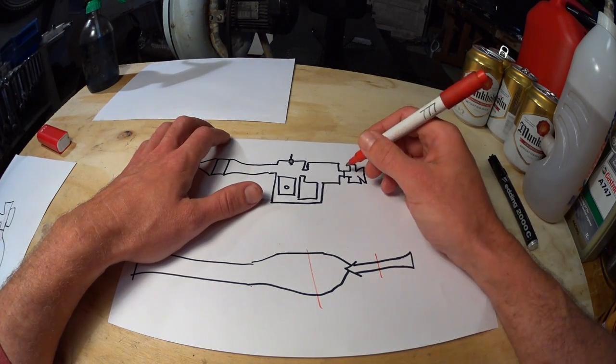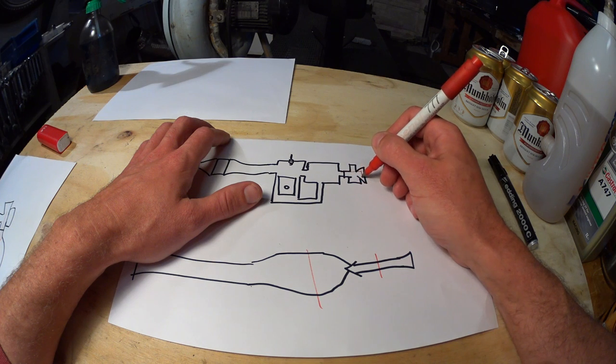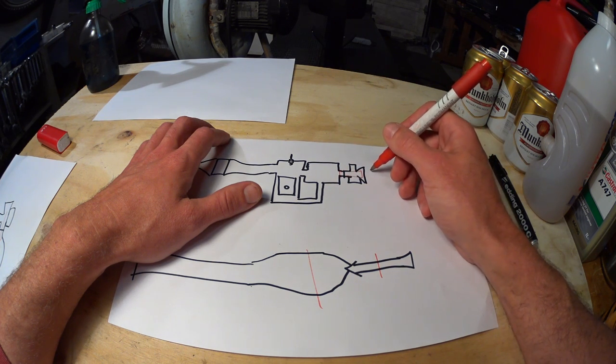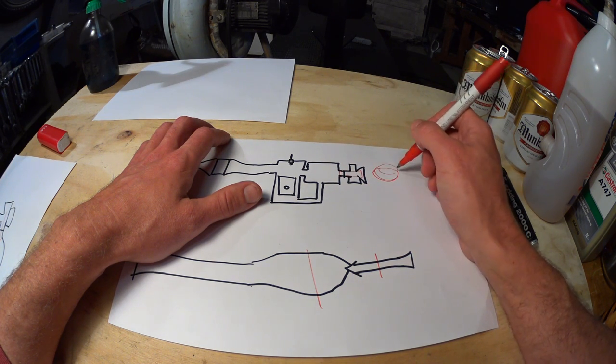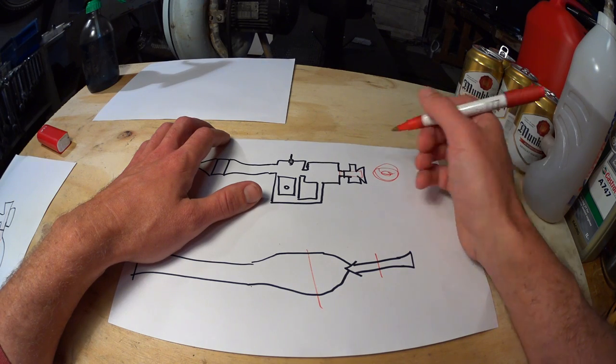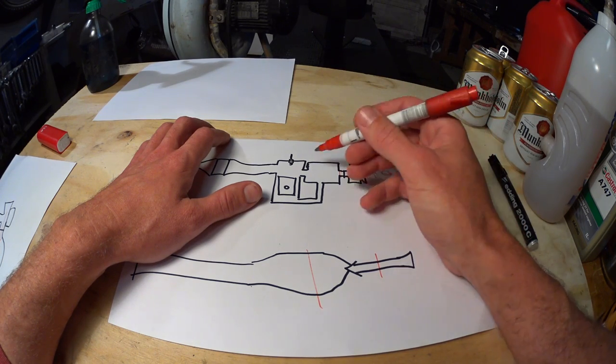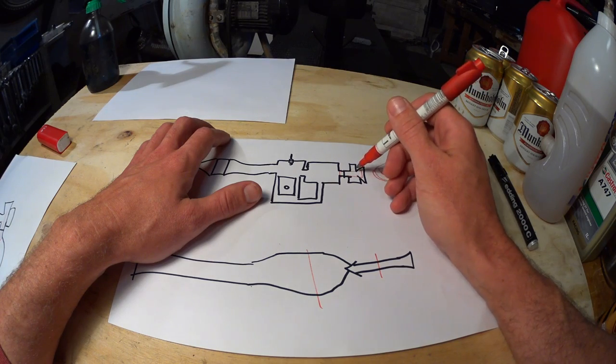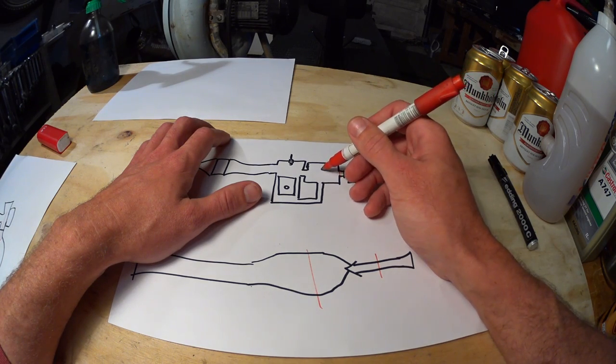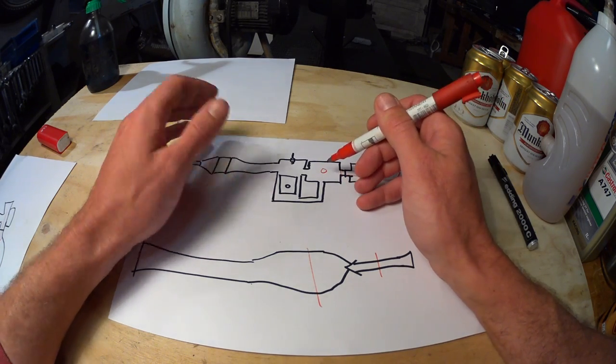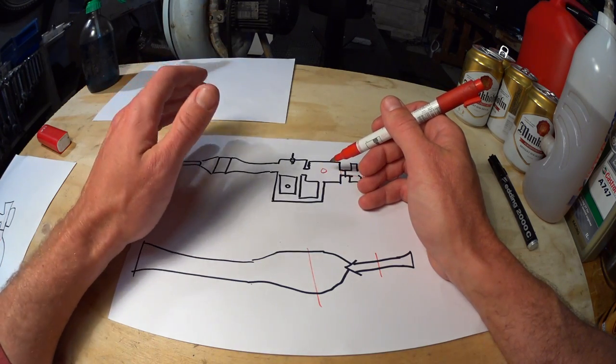So let's start at the intake here. So we have a small volume, which is connected to a large volume, the atmosphere, which is sometimes connected to a smaller than the atmosphere, but larger than the intake volume, the crankcase. But that crankcase is constantly varying in volume.